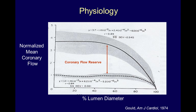Lance Gould is probably the world expert in coronary physiology. He trained here with Jim Caldwell and Jim Ritchie at the Seattle VA and worked here for quite a while. He's now at Texas Heart. He did this study in the 70s on dogs, looking at on this axis the amount of blood flow down a coronary artery — in cc's per minute per gram of tissue. In the normal resting state, just sitting here, we have about one cc per minute per gram of myocardium.